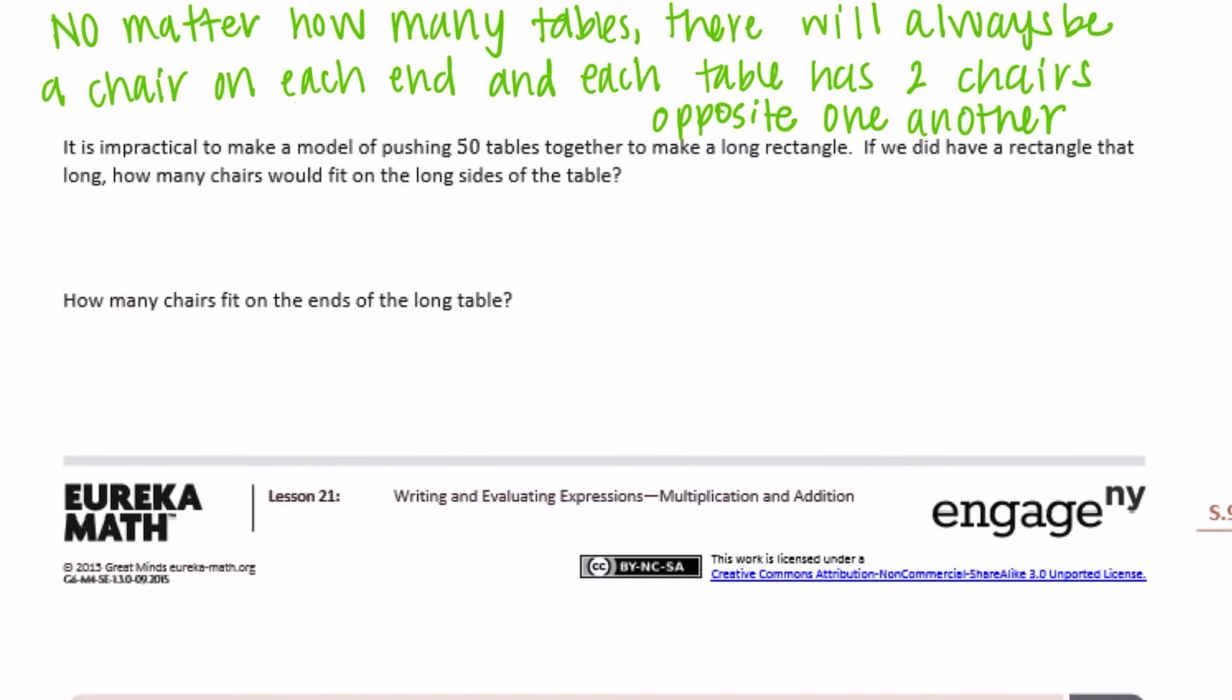It's impractical to make a model pushing 50 tables together to make a long rectangle. If we did have a rectangle that long, how many chairs would fit on the long sides of the table? So it's saying we made a big model and this was 50 chairs or 50 tables all pushed together, saying on the long sides, these sides, how many chairs could fit there? Well for every table, there would be two chairs, one across from each other. So that would be 50 times two or 100 chairs on the long sides.